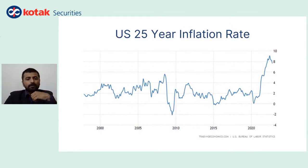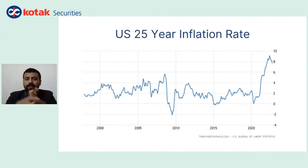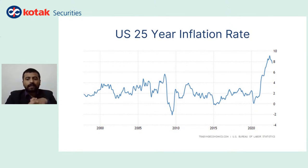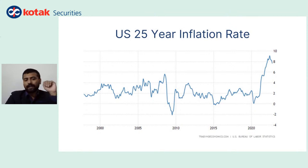First, we will take a 25-year inflation rate. You can see the years mentioned on the bottom — these are the last 25 years. Looking at this, inflation in the U.S. right now, in the last 25 years, is at the peak. It is at the highest the U.S. has seen.